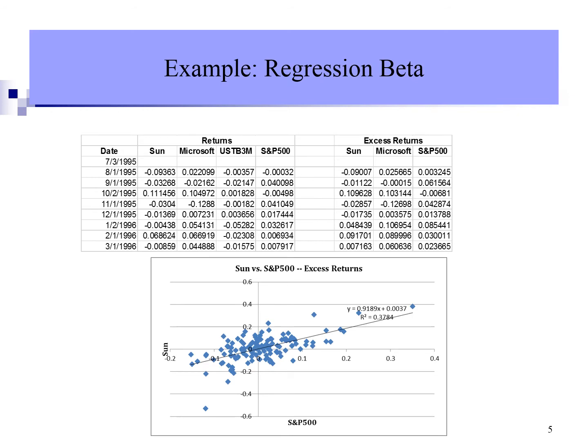The objective of this video is to learn how to calculate beta for stocks. We are going to use an example that consists of two stocks, Sun and Microsoft. The risk-free rate is represented by three-month US Treasury bill rate. The S&P 500 return is used as proxy for market return. The sample data consists of 141 monthly returns. The data is available in the blackboard system.